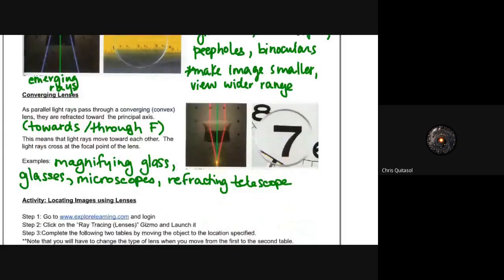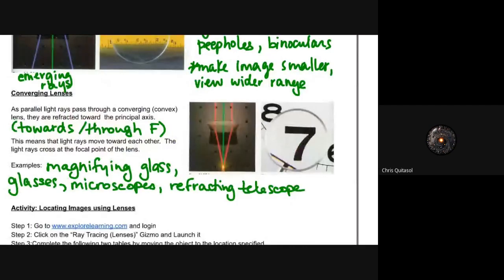Converging lenses allow things to converge on that f, towards and through f. This means that light rays move towards each other. If the incident rays are traveling parallel to the principal axis, once they hit the lens, they will converge and refract onto that focal point or that f. Examples of useful converging lenses are magnifying glasses, glasses, microscopes, and refracting telescopes.